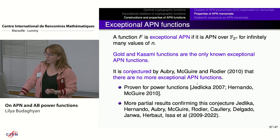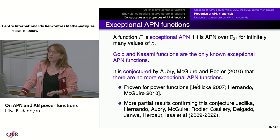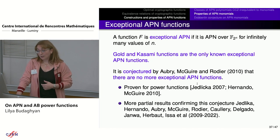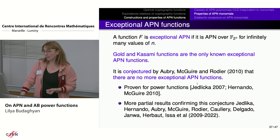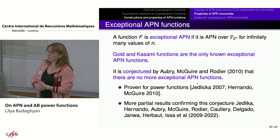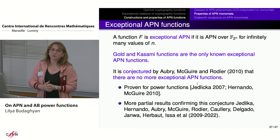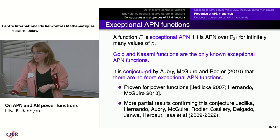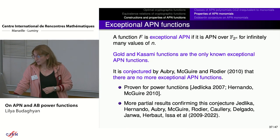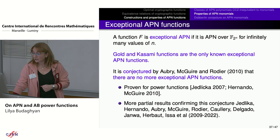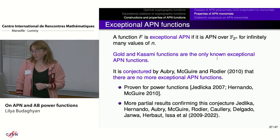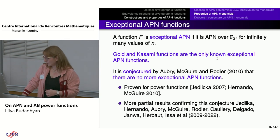One important property is being exceptional APN: a function F is called exceptional APN if it is APN over F_{2^{2N}} for infinitely many values of N. Gold and Kasami functions are the only known exceptional APN functions, and it was conjectured in 2010 that there are no others. For power functions, this conjecture has been open since 1995 and was proven positively — Gold and Kasami are the only exceptional APN power functions. For general polynomials, the conjecture remains open, with several partial results.